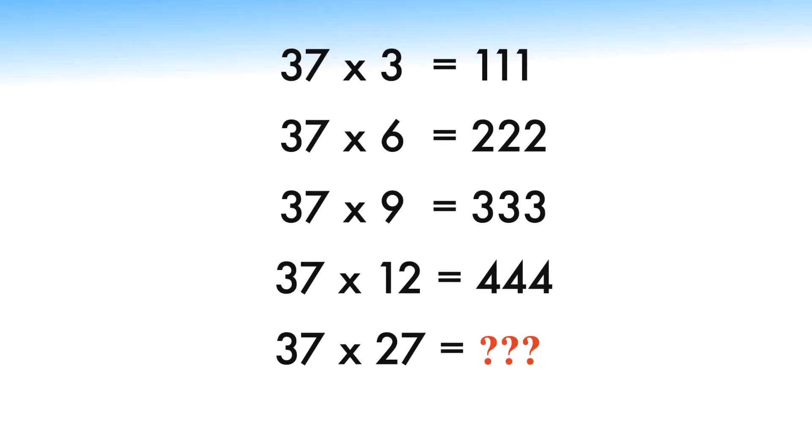Welcome to SimplyLogical, this is Venkitesh. Observe the given multiples of 37: 37 times 3 equals 111, 37 times 6 equals 222, 37 times 9 equals 333, 37 times 12 equals 444. Find the product of 37 times 27.